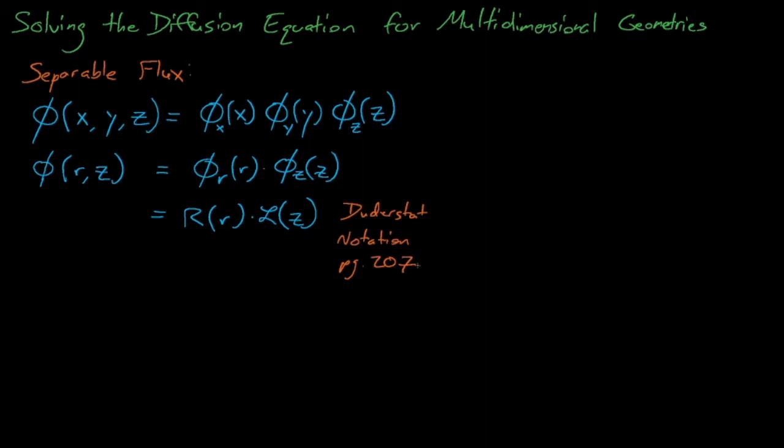Today, we'll assume that our 3D flux can be split into three independent functions in the x, y, and z dimensions. If we were to apply this thinking to a cylindrical geometry, such as in a fuel rod, then we could assume that our flux contains a term that is dependent on the radius and a term that depends on the height z in the cylinder.